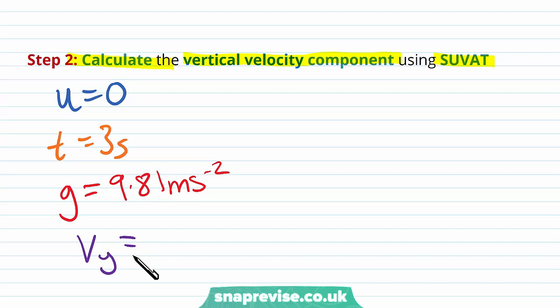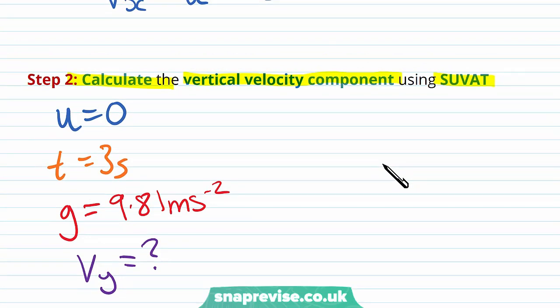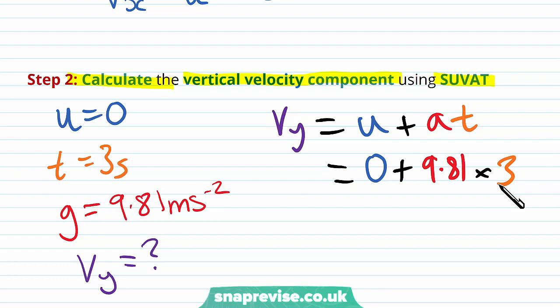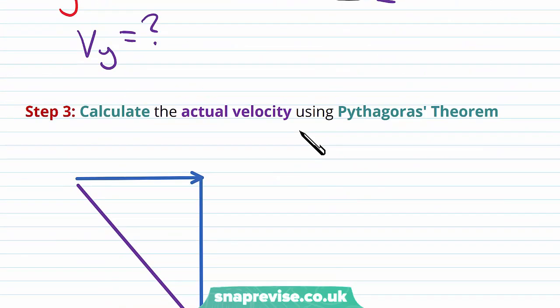We're looking for vy, the vertical component of velocity at time t. The only quantity we're not interested in is displacement, so we can use the SUVAT equation v equals u plus at. The initial velocity is zero, the acceleration is 9.81, and the time is 3 seconds. Calculating this, we get a vertical velocity component of 29.43 meters per second.